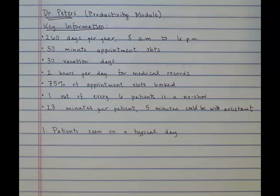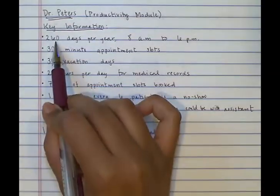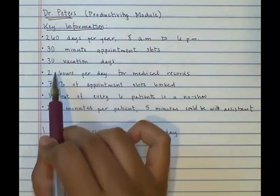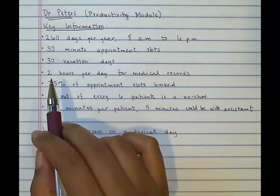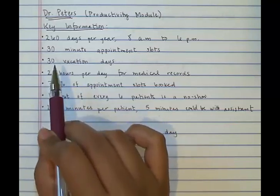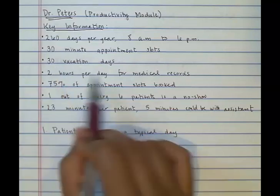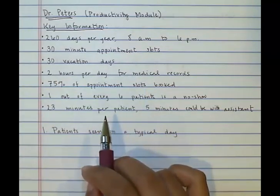The problem statement includes a lot of information, but the key points are as follows. The clinic is open 260 days per year from 8 a.m. to 6 p.m. Physicians have 30-minute appointment slots to see patients. Dr. Peters has 30 vacation days each year out of 260 total working days. He spends 2 hours each day on medical records. Notice that the problem states he loses 2 hours of work time each day, so that's a pretty good indication that updating records is considered time wasted.